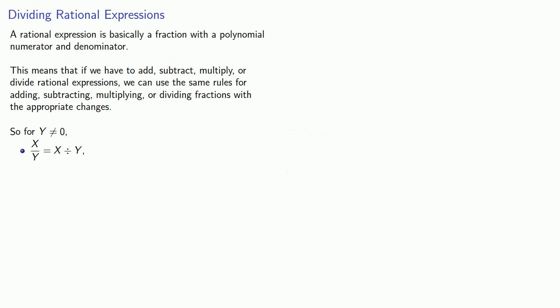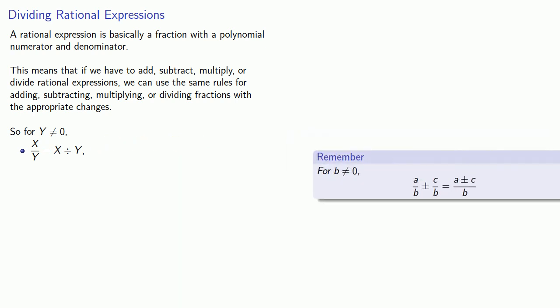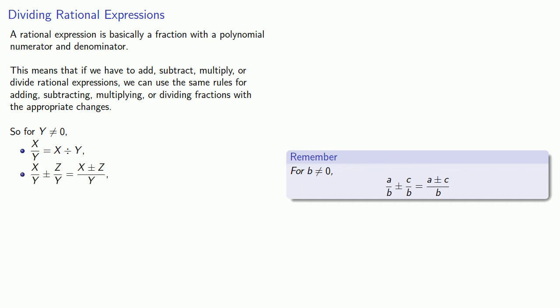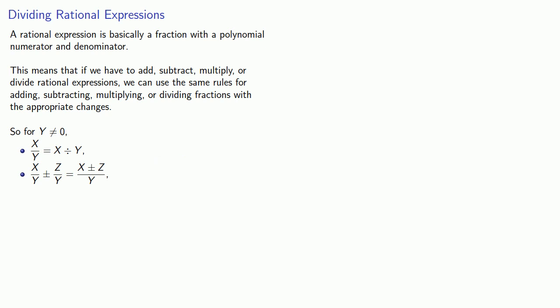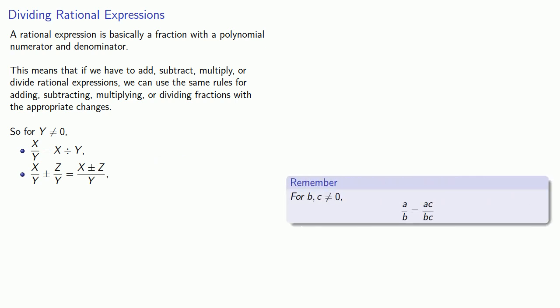If we're trying to add or subtract fractions with the same denominator, we can combine them by adding or subtracting their numerators. Likewise, if we have rational expressions x over y plus or minus z over y, we can combine them to get x plus or minus z over y. If I have a fraction or a rational expression, I can multiply numerator and denominator by the same thing, as long as it's not equal to 0.